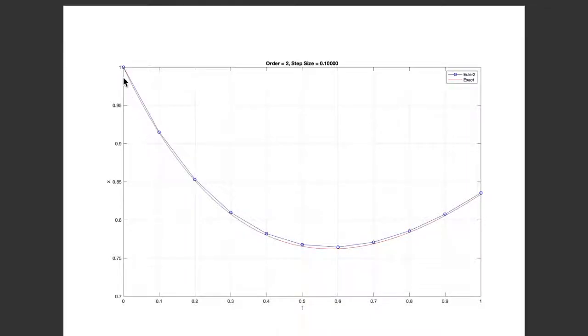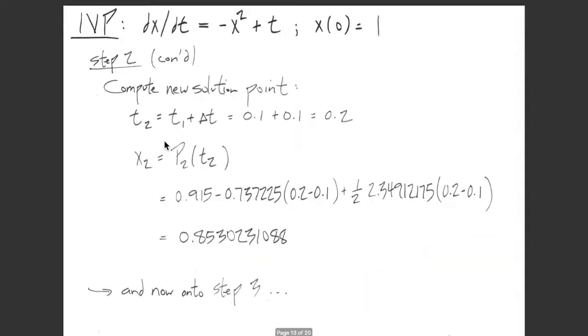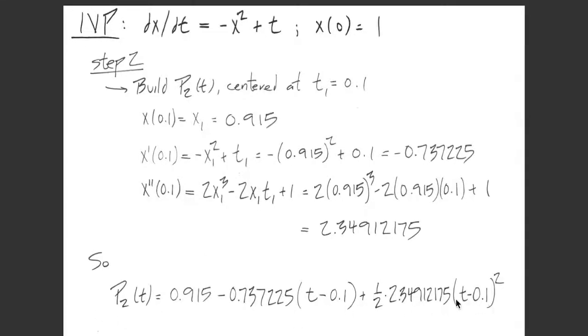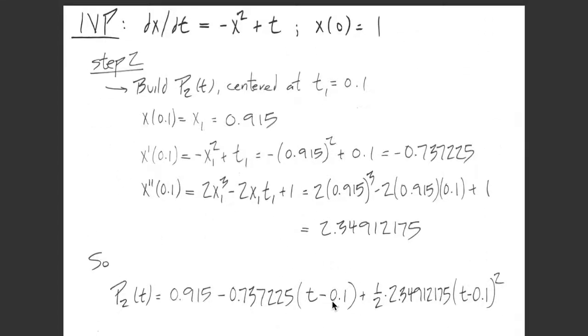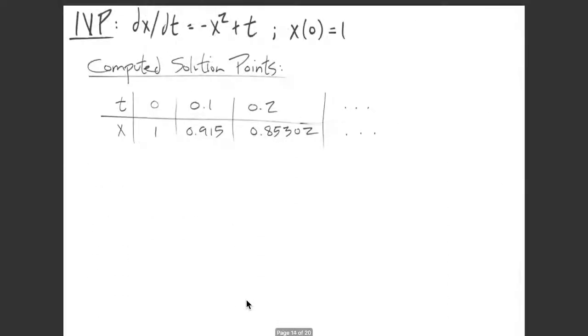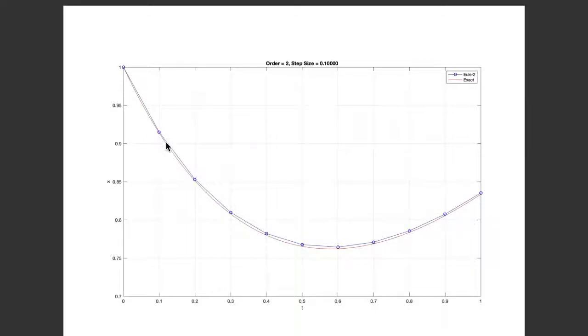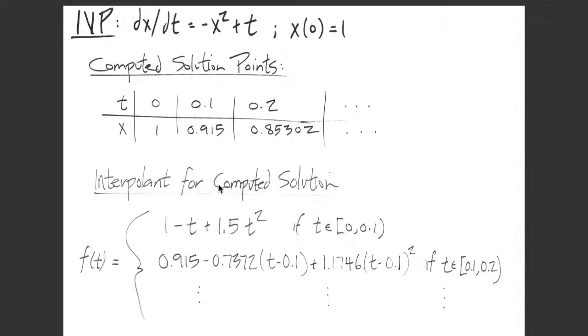I want to make an important point about these higher order methods. Notice I've connected my computed points, the circles here, by straight lines. But that doesn't make much sense because I computed these points using a degree 2 Taylor polynomial, not straight lines. These polynomials we computed are perfectly good for computing the solution at any time, not just the next point.